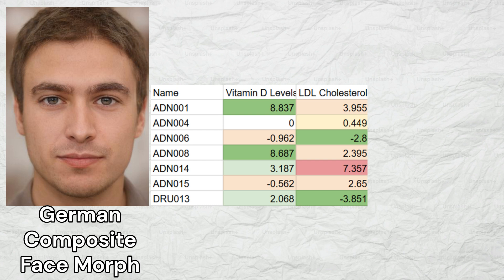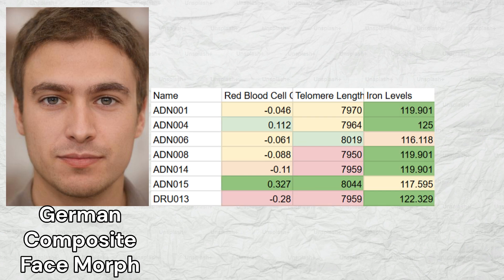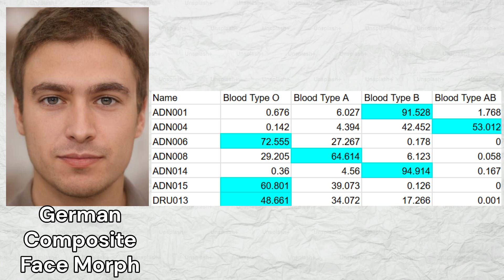The early Germans had elevated vitamin D levels, which is good, and also elevated LDL cholesterol, which is bad for cardiovascular health. They had lower red blood cell count, shorter telomeres leading to shorter biological lifespan, and mostly normal iron levels. None of the seven samples were predicted to have hemochromatosis, but two samples did have low iron levels approaching anemia. Regarding blood types, three samples had blood type O, one had blood type A, two had blood type B, and one had blood type AB. Four samples had high odds of type 2 diabetes and four samples had low odds of Alzheimer's.